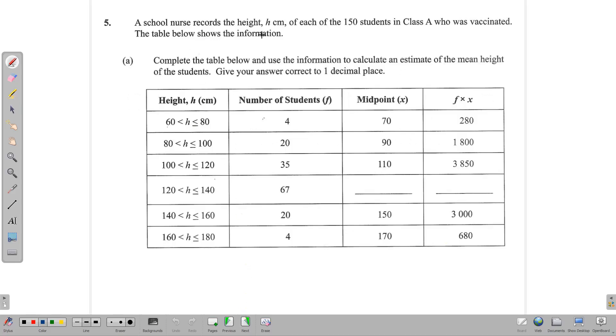That is the statistics question. It begins, a school nurse records the height h of each of the 150 students in a class, and the information is shown here in the table where we have the intervals, the height, the frequency, the midpoint, and the frequency times midpoint. The first part of the question says, complete the table below using the information to calculate an estimate of the mean height of the students and give your answer correct to one decimal place.